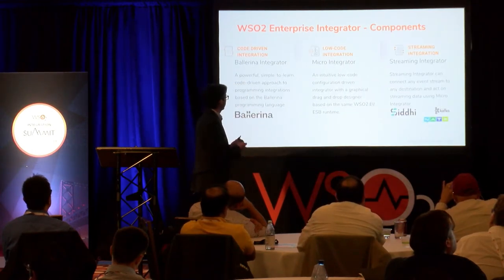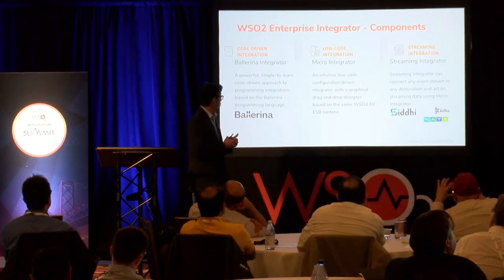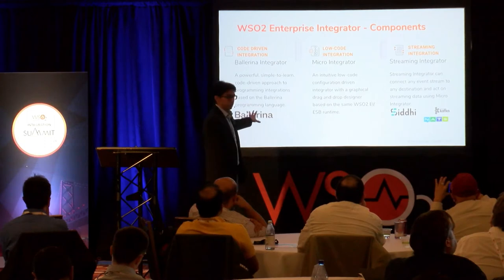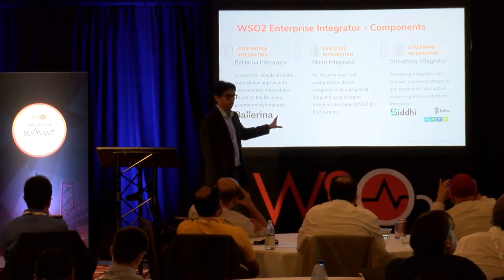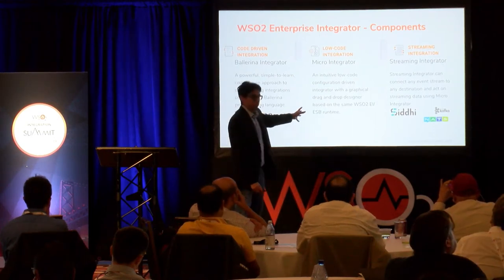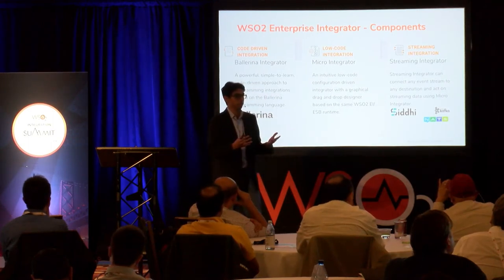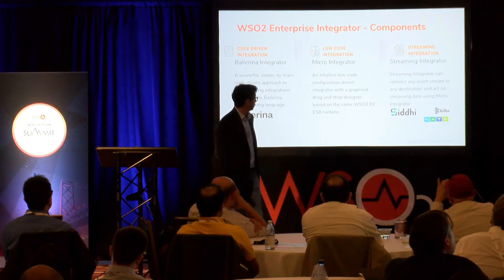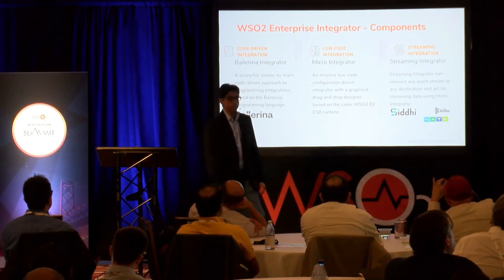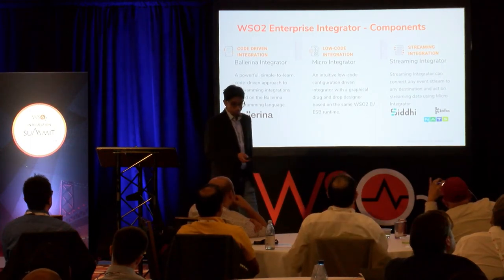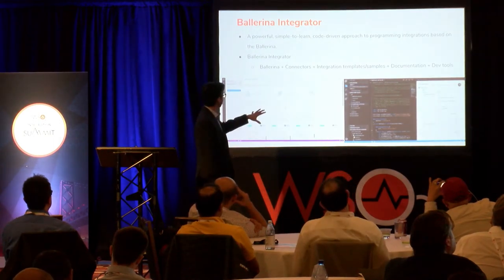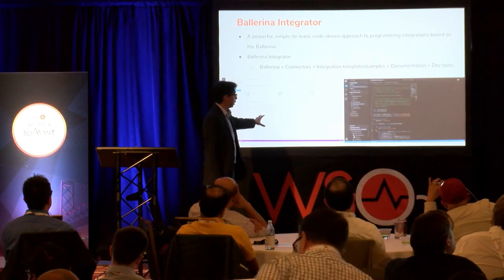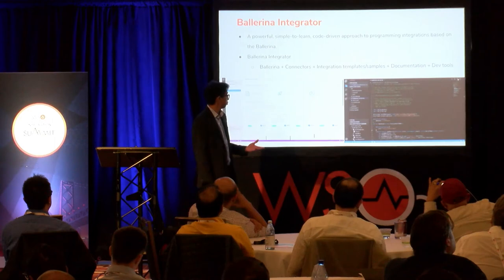WSO2 Enterprise Integrator 7.0 comprises three main components. The Ballerina Integrator is the commercially supported version of Ballerina — this is the first release including Ballerina as a commercially supported offering from WSO2. It provides integration patterns and templates to integrate with different vendors such as Salesforce and SAP. From the development tool, you select templates, and it generates the required Ballerina code skeleton. You can also visualize all interactions in a sequence diagram.